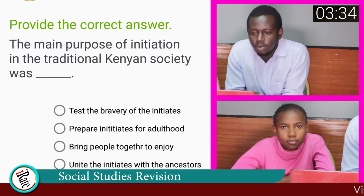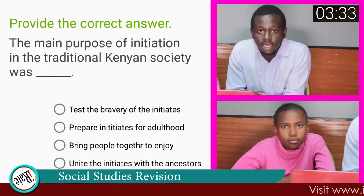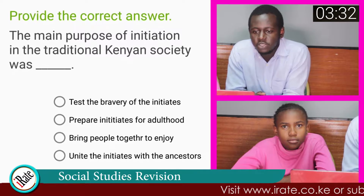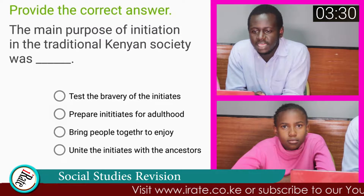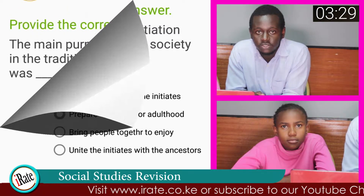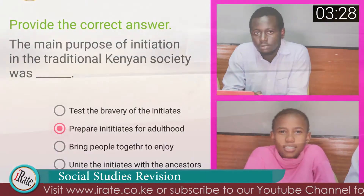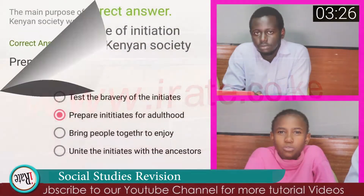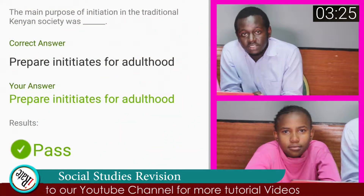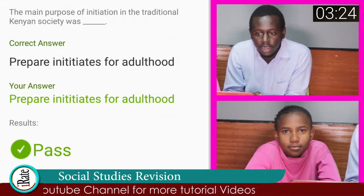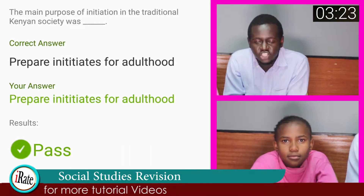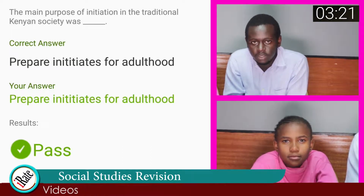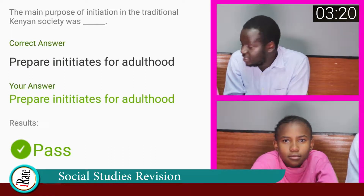Question number one: The main purpose of initiation in the traditional Kenyan society was? The correct answer to question one is: prepare initiates for adulthood. The student is correct.